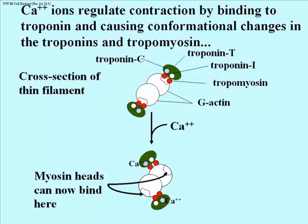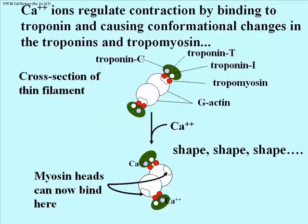For as long as there is calcium in the vicinity of the myofibrils able to interact with the actin, myosin heads will be able to go through their conformational changes and draw actin filaments along myosin. It's all a matter of shape — conformational changes induced by calcium binding to troponin C, which causes a conformational change in the other troponins and in tropomyosin, and that change is reflected as a movement away from the sites where myosin can bind.